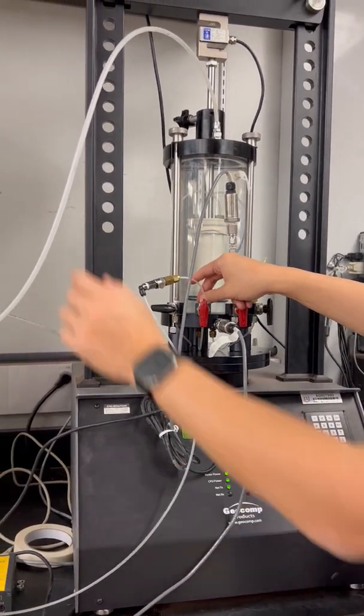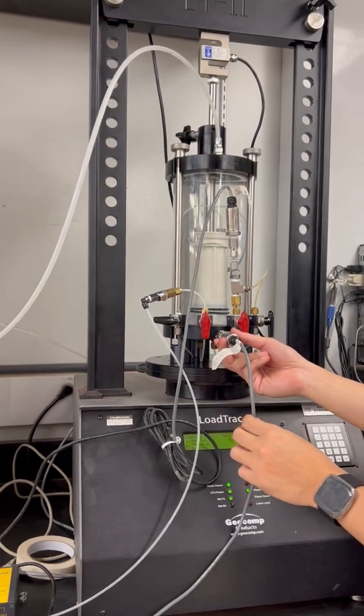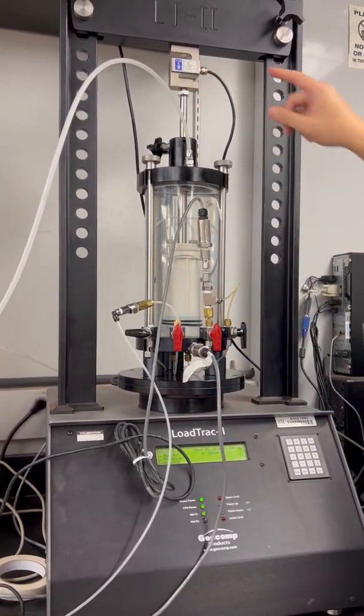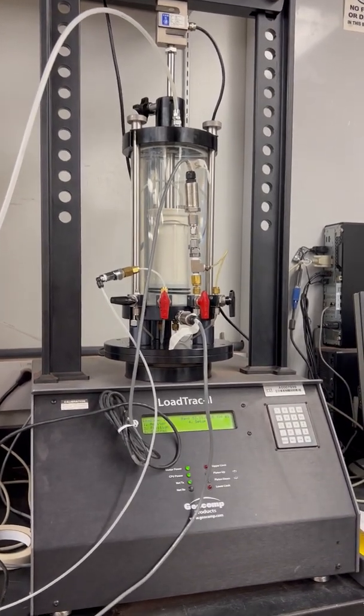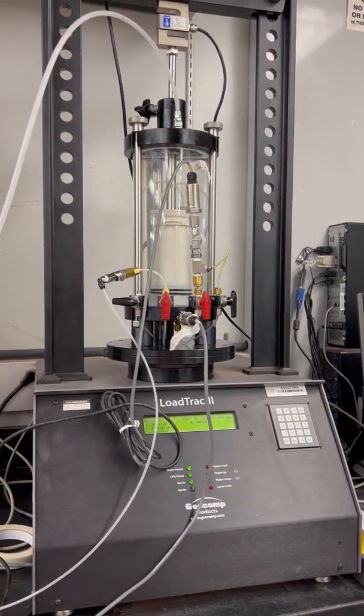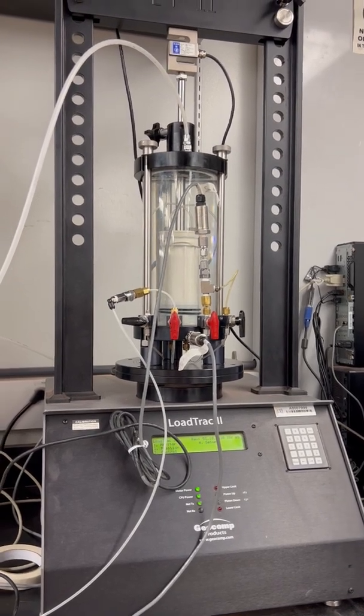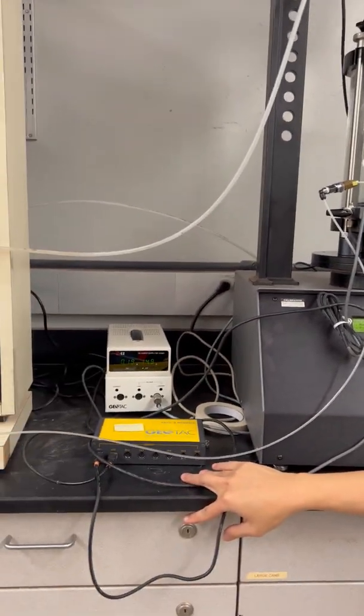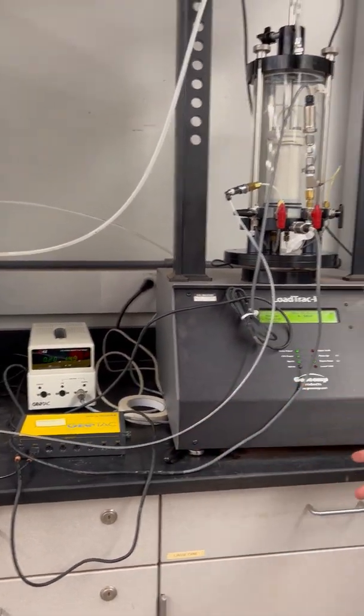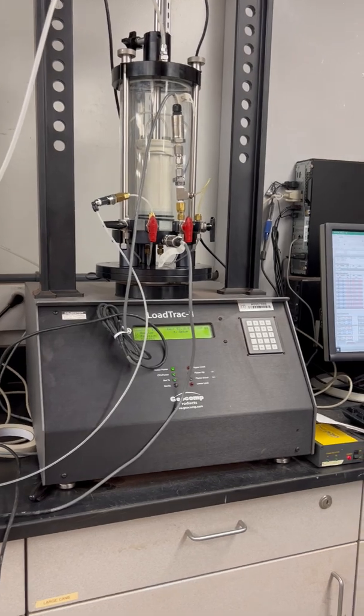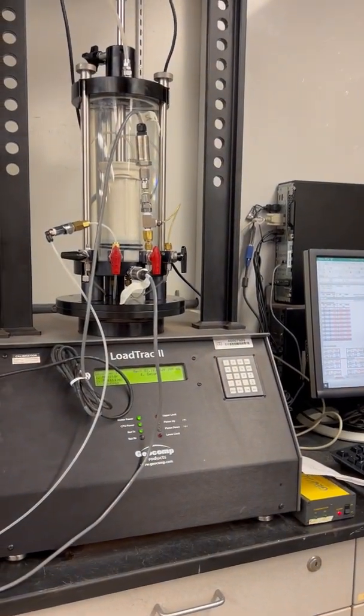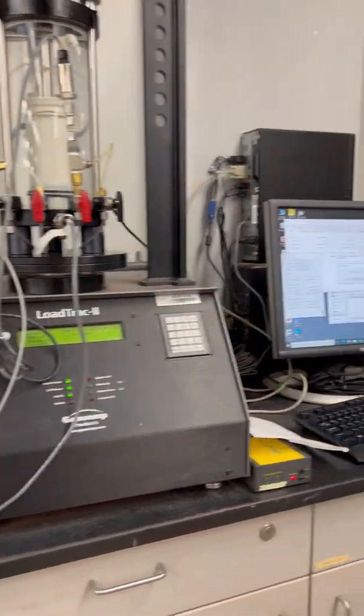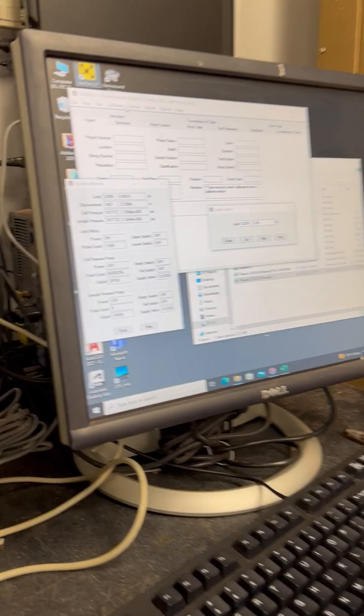The way it's set up now is we have a back pressure supply, cell pressure supply, cell pressure sensor, and back pressure sensor plus the load cell. For our setup here, the pore pressure sensor and those two pressure sensors are picked up by this data acquisition system by Geotech. You saw the software - it's pulling up the data acquisition system.